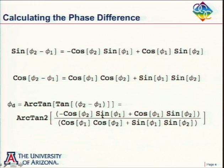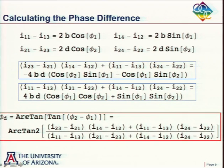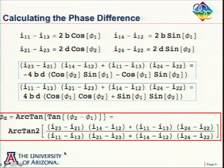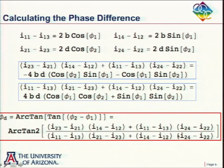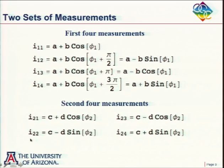Taking those relations and plugging them back into the equation and going through the algebra, we end up with phi_difference = phi_2 minus phi_1 given by the arc tangent of just these irradiances: (I_2,3 minus I_2,1) times (I_1,4 minus I_1,2), and so on. We can determine phi_2 minus phi_1 simply by a little bit of algebra with these eight irradiance measurements.